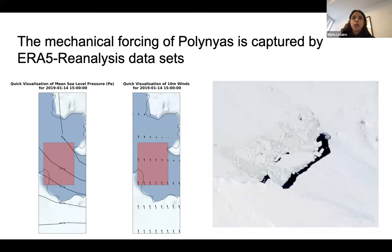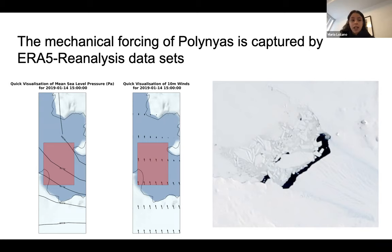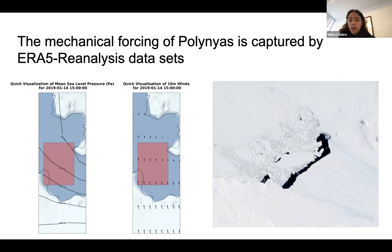The last thing we wanted to do was start to understand what physical processes might be driving the creation of these polynias — trying to quantify the mechanical and thermal components. To do that, we looked at ERA5 reanalysis data. What we see here are plots for mean sea level pressure and 10-meter winds, with the red box representing the area over which the polinia actually is. The pressure gradients and corresponding winds show a wind motion that we can interpret as contributing to the formation of this polinia — the mechanical forcing — in addition to whatever thermal contributions there may be. These plots are for Pine Island, dated April 15th.